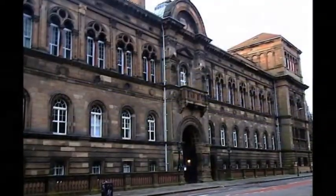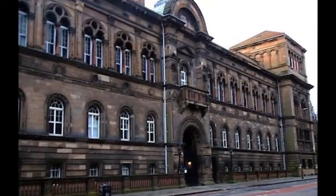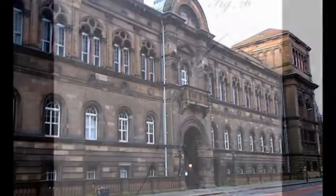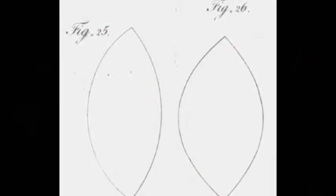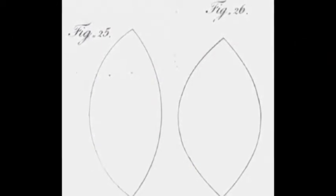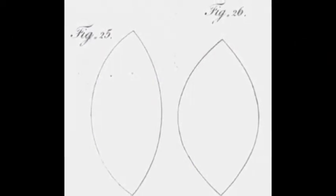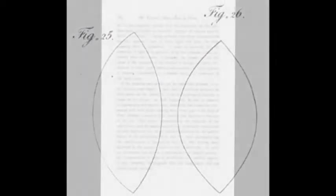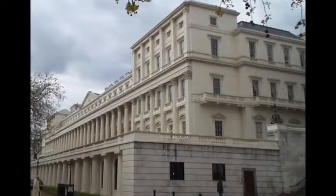In fact, while still in medical school, he discovered how the lens of the eye changes shape in order to focus on objects located at different distances. At 19 years old, he documented his findings in a paper he titled Observations on Vision, and presented it to the Royal Society.